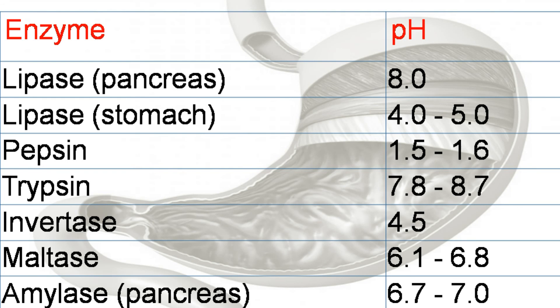Like lipase, lipase needs around pH 4 or 5 to act properly. Pepsin works better in acidic environment, like pH between 1.5 to 1.6.